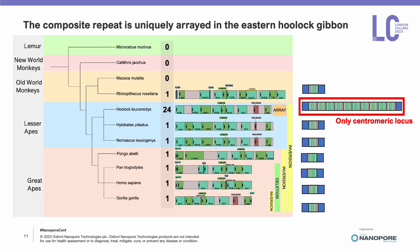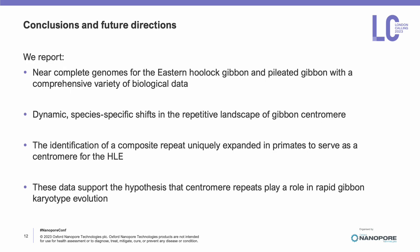If we expand this view of the repeat unit across the phylogeny of primates, we're able to detect this organization of transposable elements in all apes and as far back as old world monkeys. While it's undergone inversions and deletions in some lineages, the only lineage that exists as an array is that of the hoolock, and that's the only one that exists as a centromere locus. Overall, the identification of this repeat uniquely expanded and serving as a centromere in the eastern hoolock gibbon suggests that centromere repeats and centromere inactivation are playing a role in the rapid karyotype evolution of gibbons.